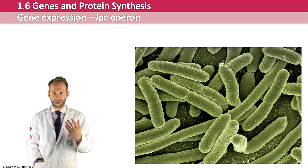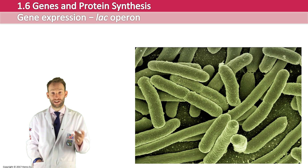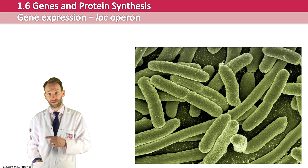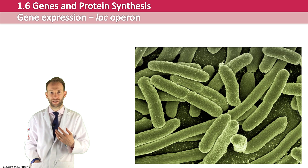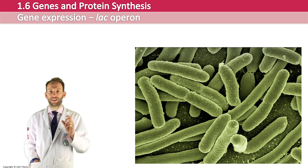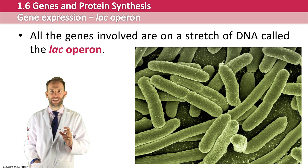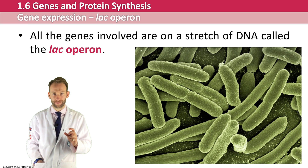But if you grow E. coli on lactose, then these genes need to be switched on in order to make those enzymes to digest the lactose and be able to absorb it. The genes required for this are on a particular stretch of DNA called the lac operon.